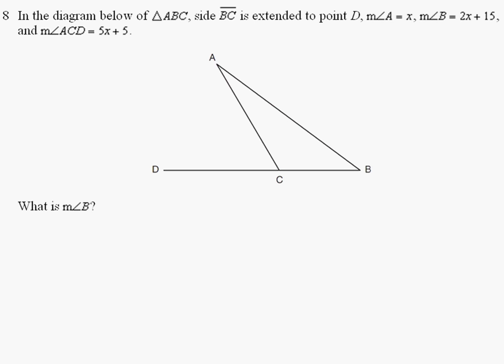In the diagram below of triangle ABC, side BC is extended to point D. Measure of angle A equals x, measure of angle B equals 2x plus 15, and measure of angle ACD equals 5x plus 5. What is the measure of angle B?